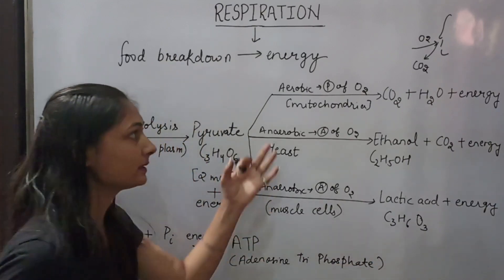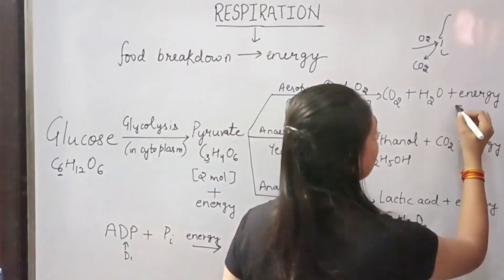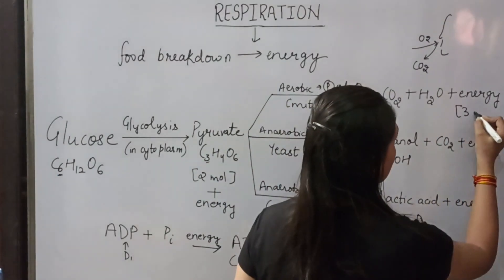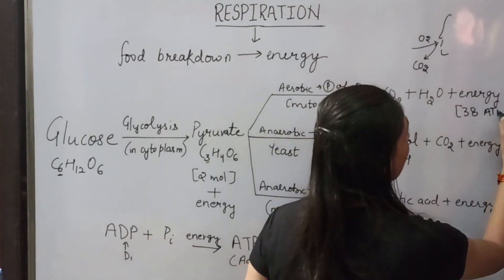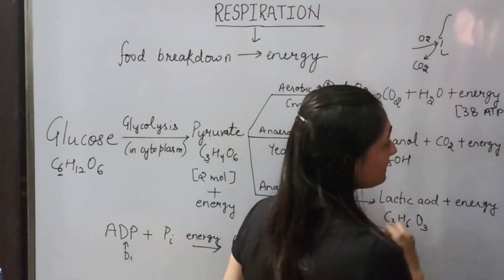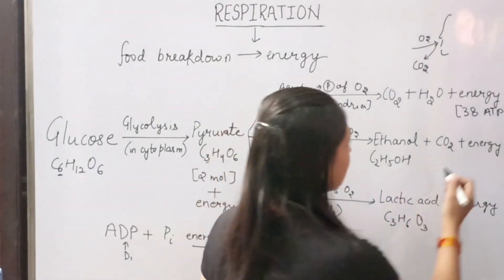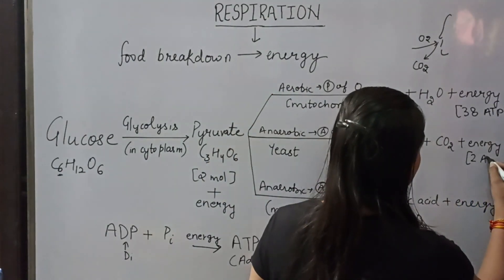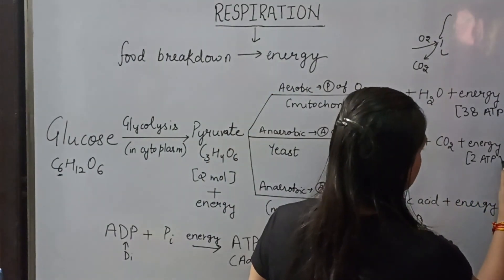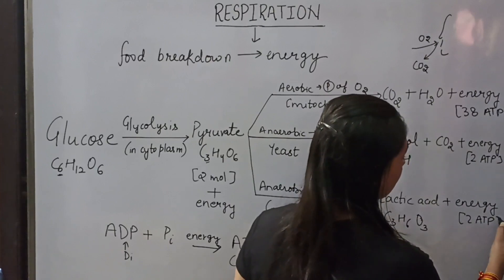If we look at aerobic respiration, it produces 38 ATP energy. If we talk about anaerobic respiration, the energy produced is 2 ATP. Similarly, in the other case of anaerobic respiration, 2 ATP energy will be produced.